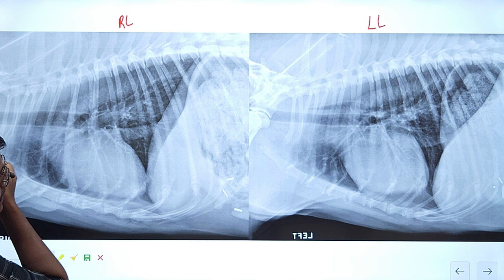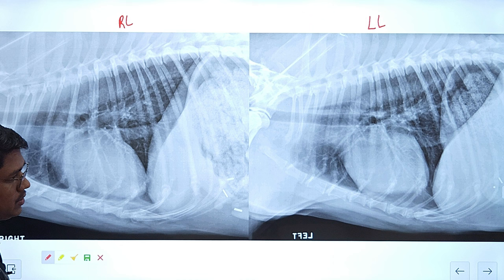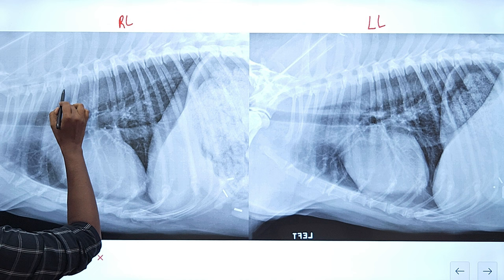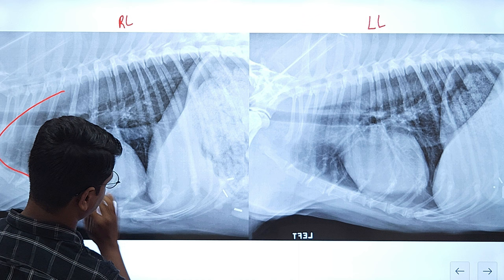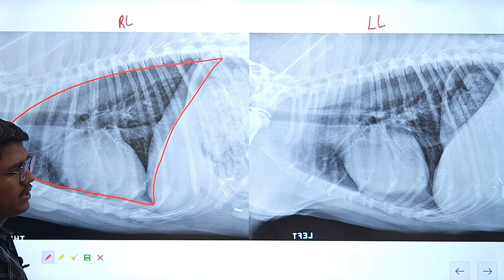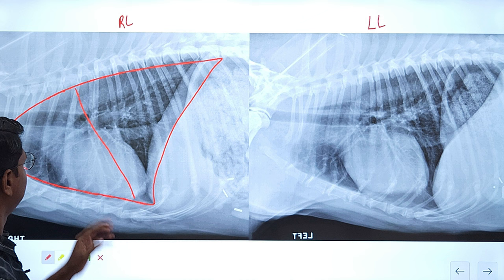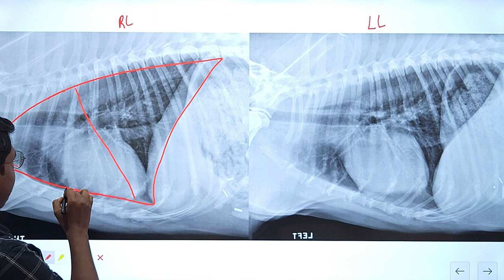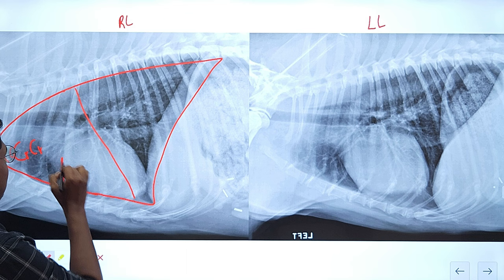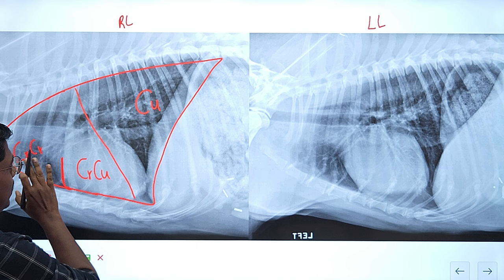In the right lateral radiograph, the right lung is atelectatic, so you are basically evaluating the left lung. The left lung is basically divided into two parts: the cranial lobe and the caudal lobe. The cranial lobe is again divided by a septum into the cranio-cranial and the cranio-caudal. In the left lateral, the left lung is atelectatic, so you are evaluating the right lung.